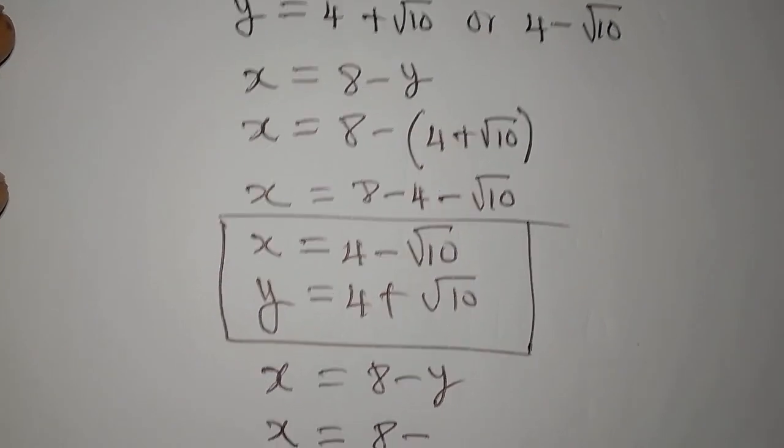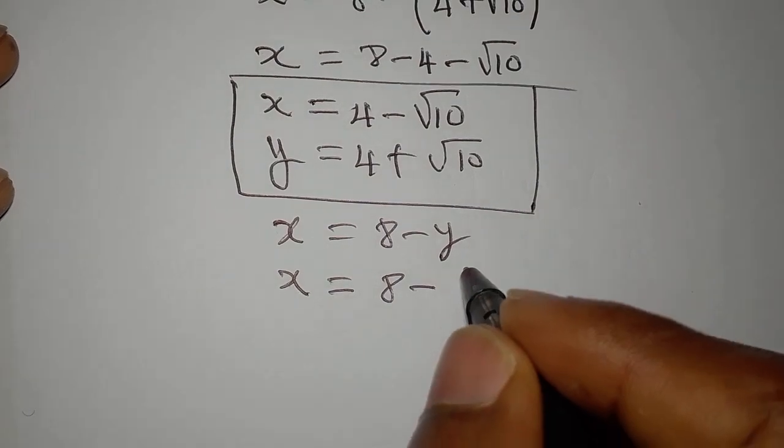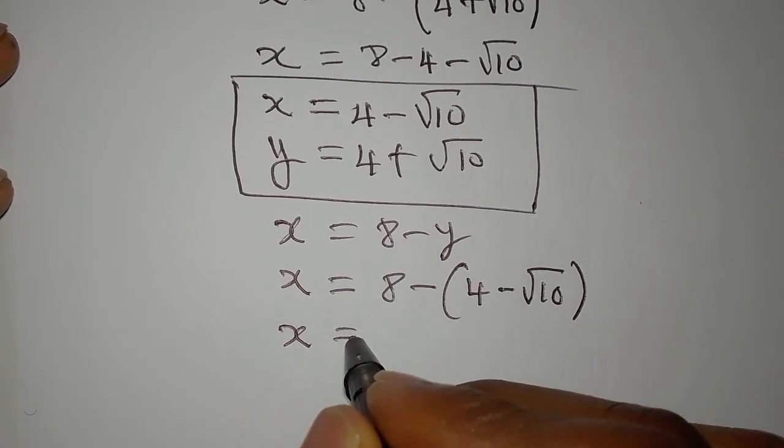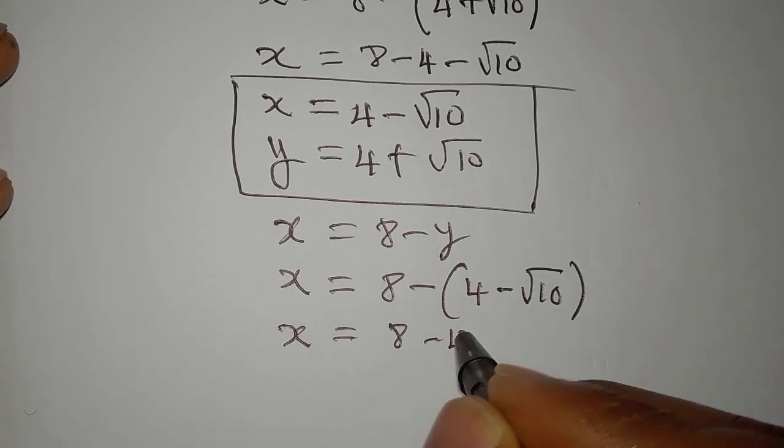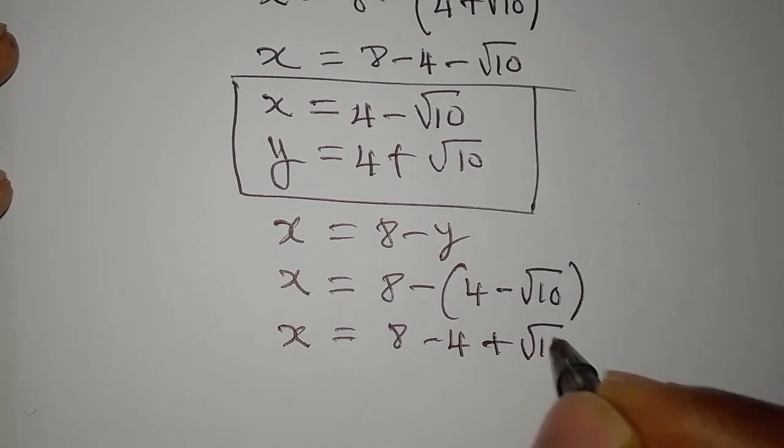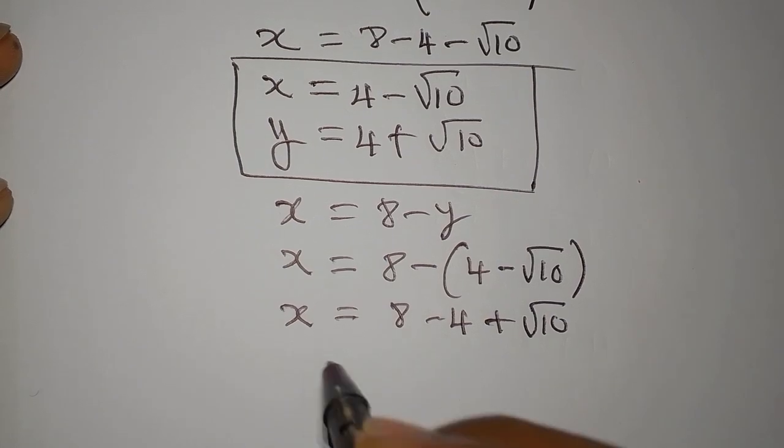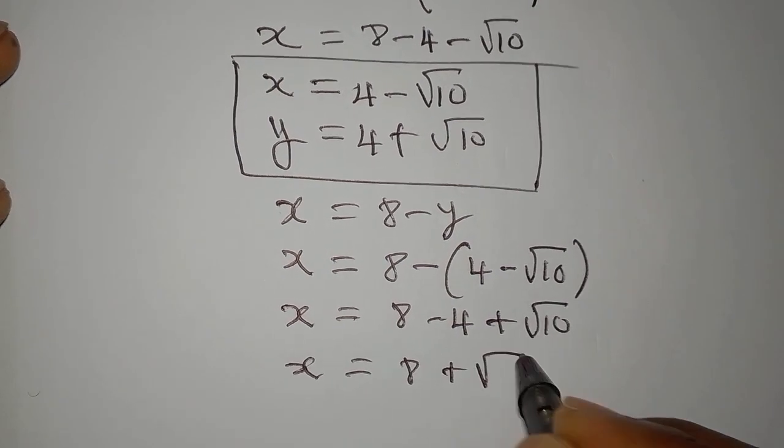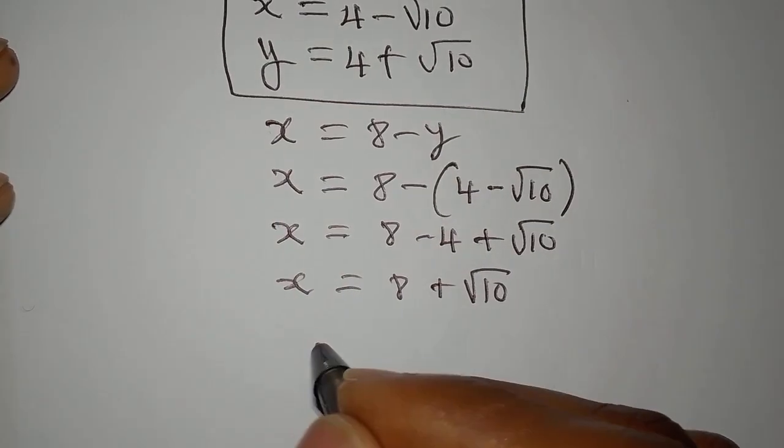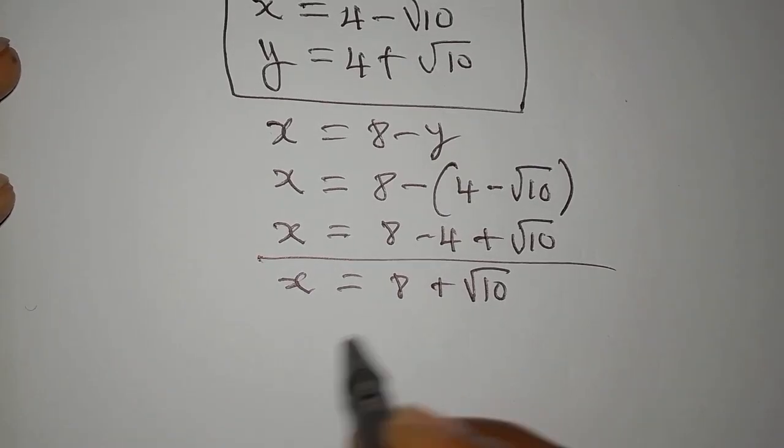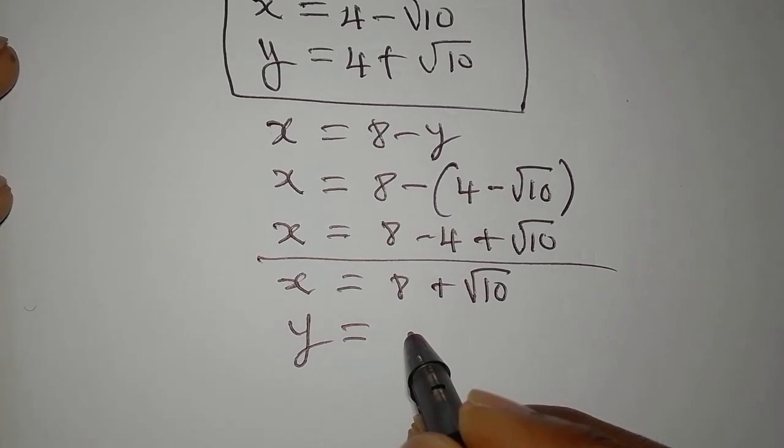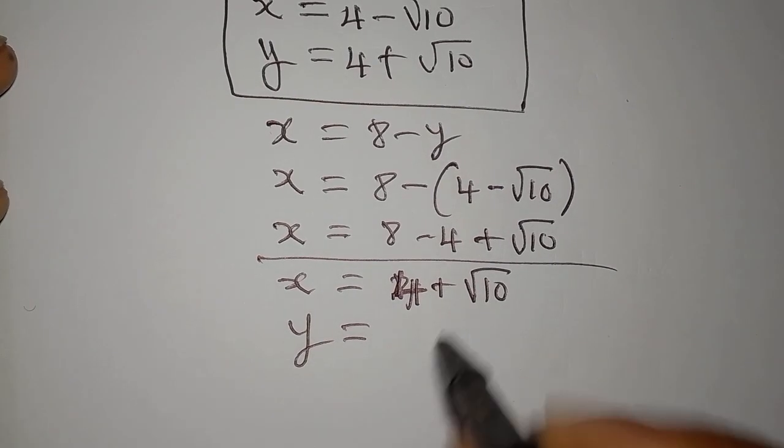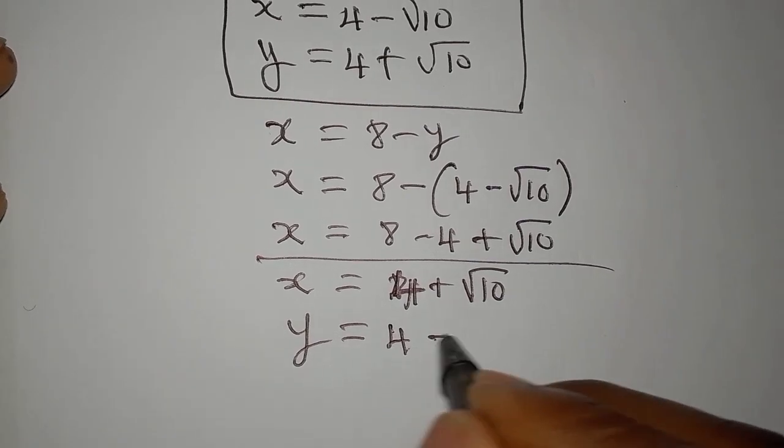4 minus root 10. So, here, I'll write, open bracket, 4 minus root 10, right? So, that x will be equal to 8 minus 4 plus root 10. The negative is to open the bracket, and our x is equal to 8 plus root 10. Okay, and at the end of the day, when x is equal to this, y is, by the way, this is 4. Okay, so, when x is equal to this, y is 4 minus root 10.